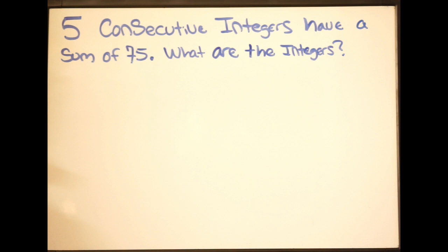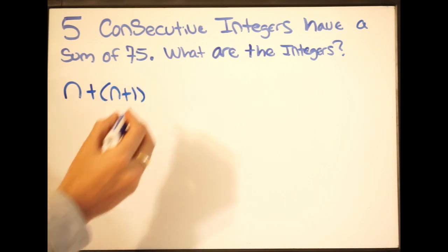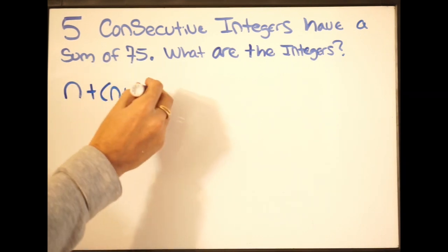So we can do that the following way. Starting with our first integer, we'll just call n. So we have n. Here's my first integer. And remember, it's consecutive. So the next one will look like this, plus n plus 1. So here's my first one, my second one.